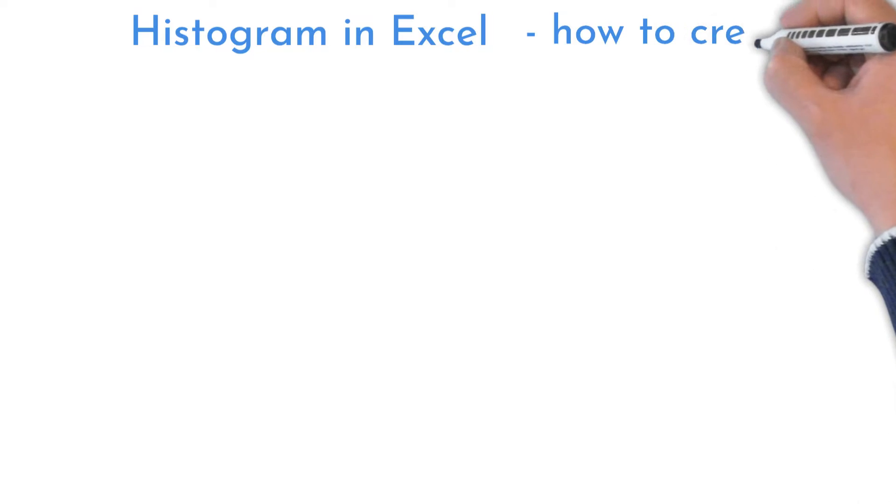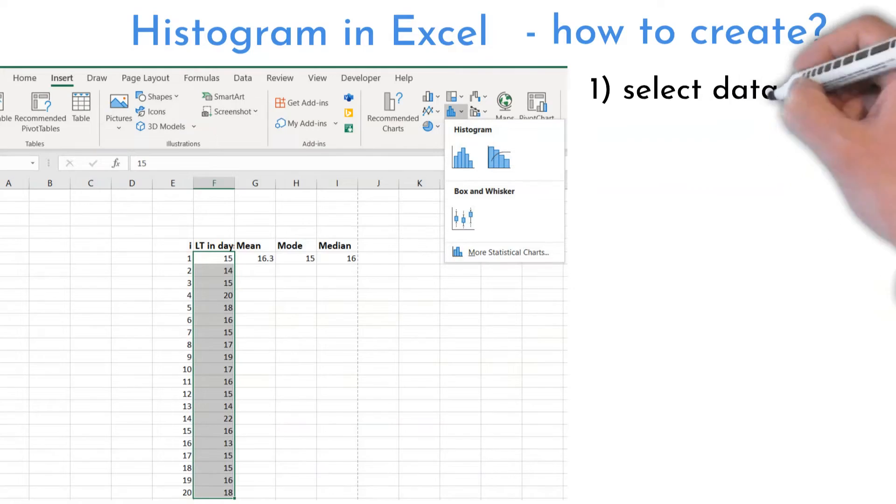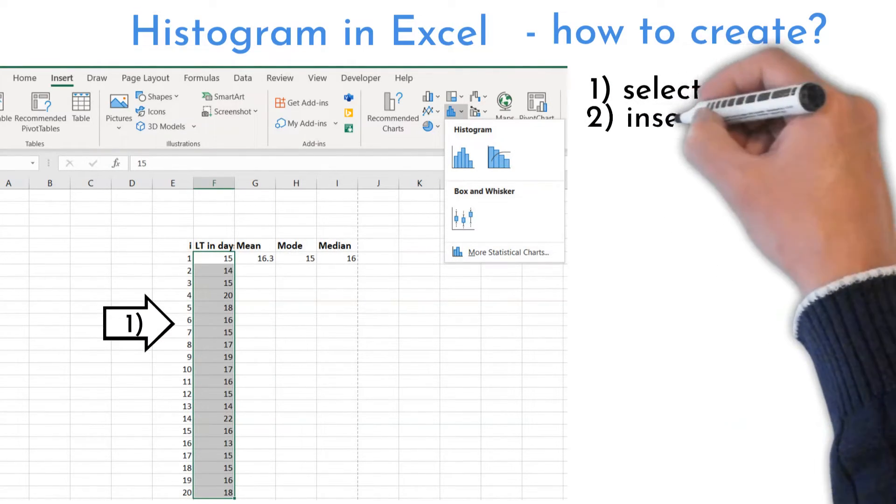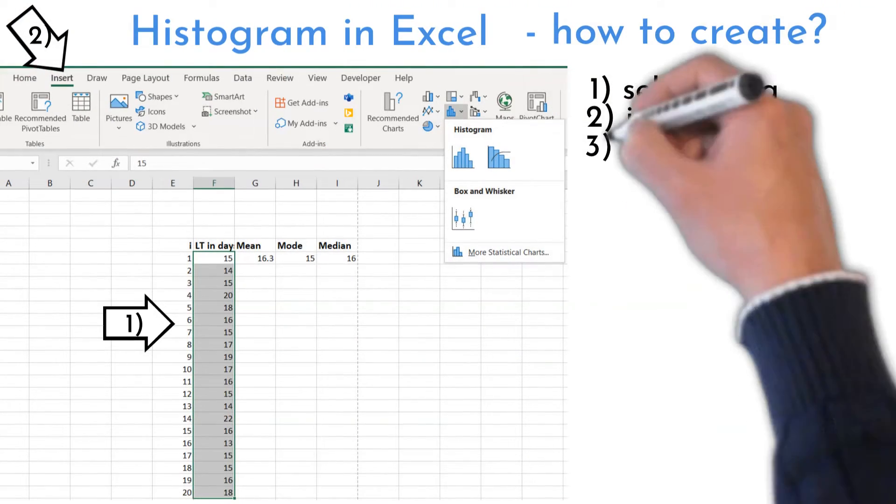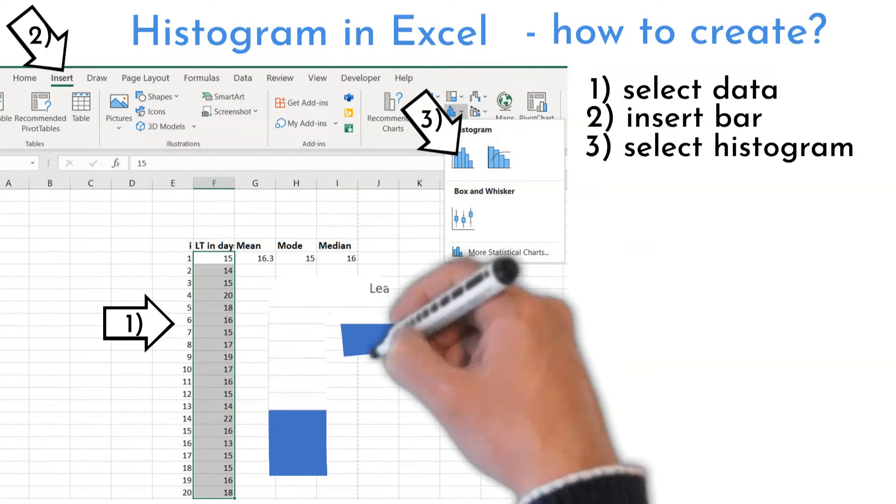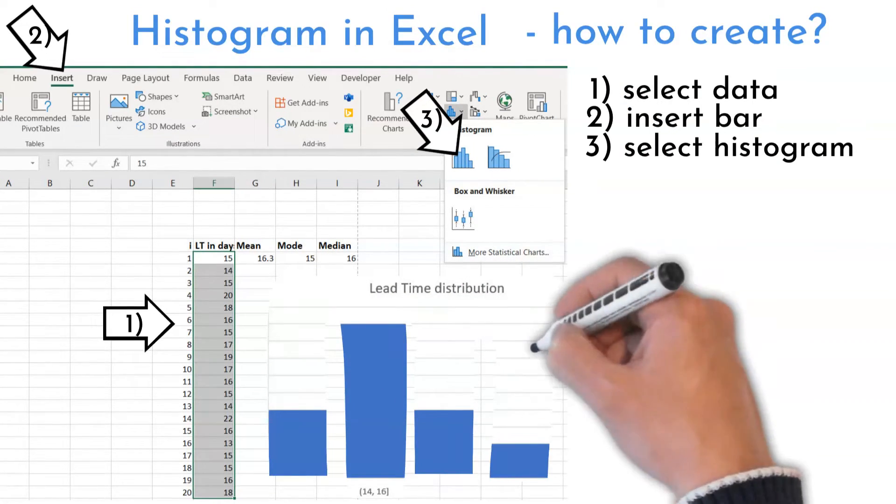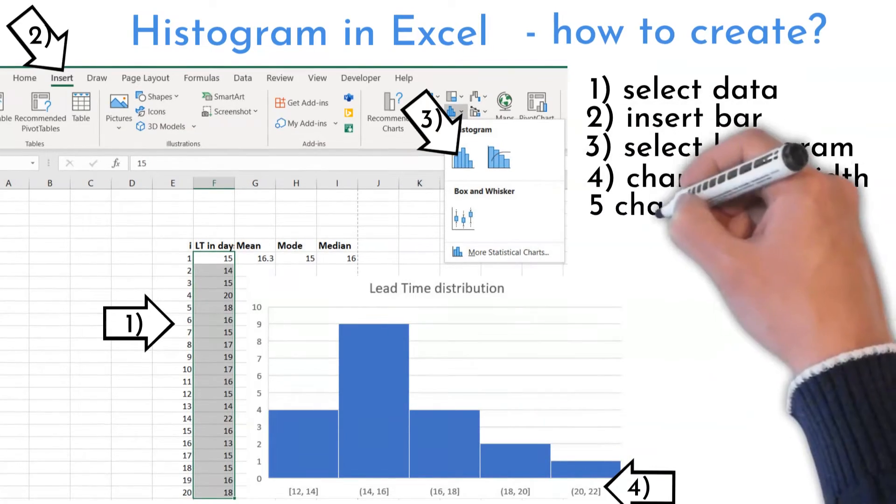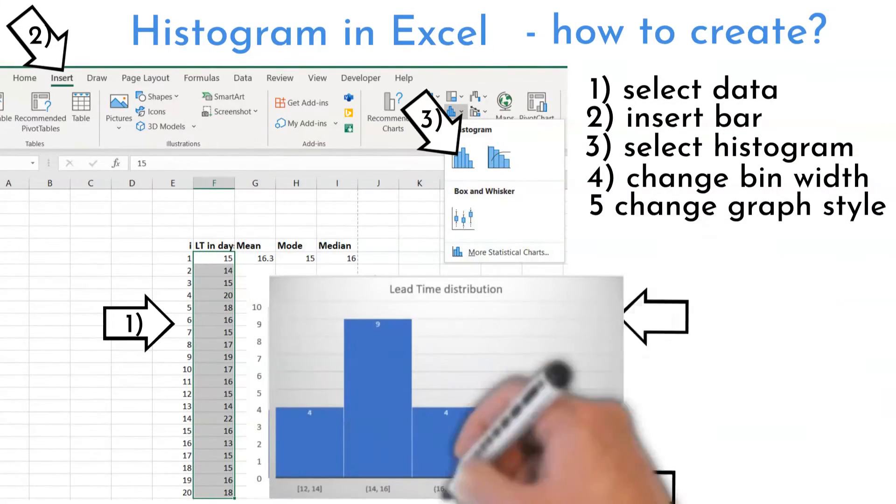This is how you can do histogram in Excel. This set of data is for a lead time of 20 parts through production in days. Select your data. Go to insert bar. Select histogram. By double clicking on x-axis, you can change bin width. Change graph style by clicking brush and choosing your style.